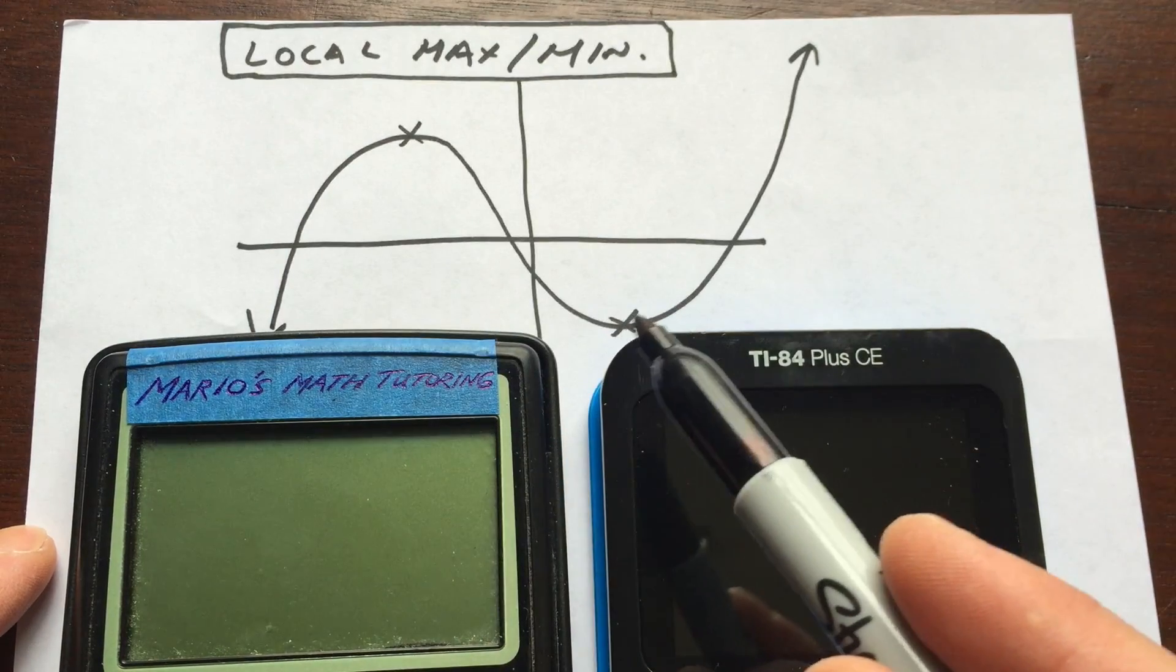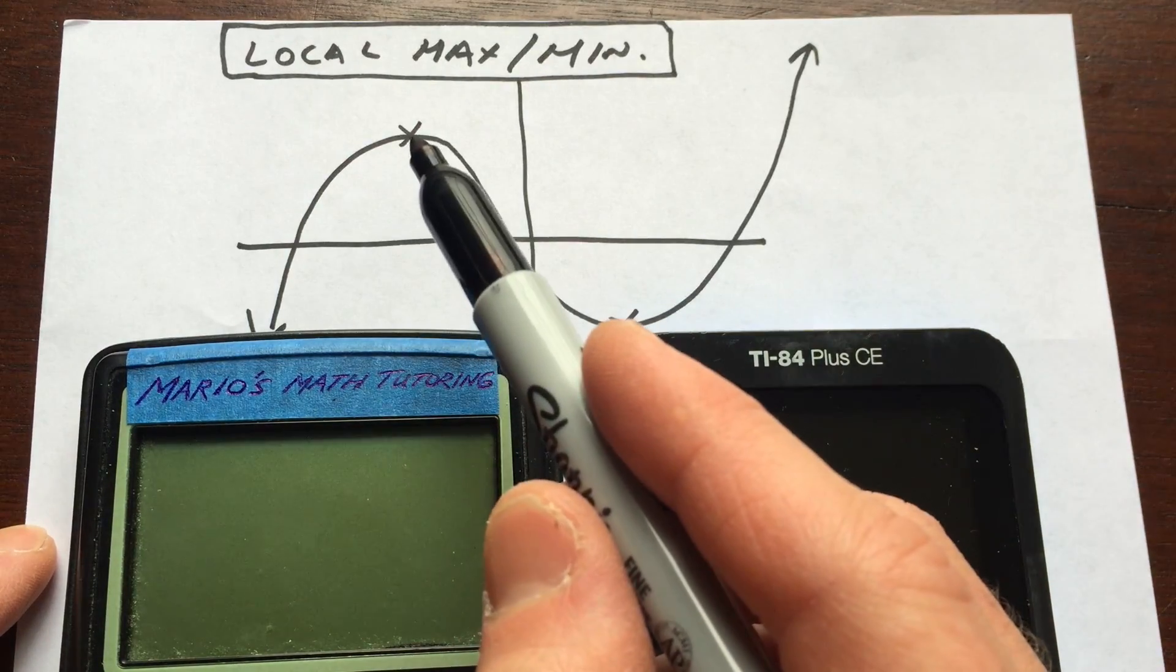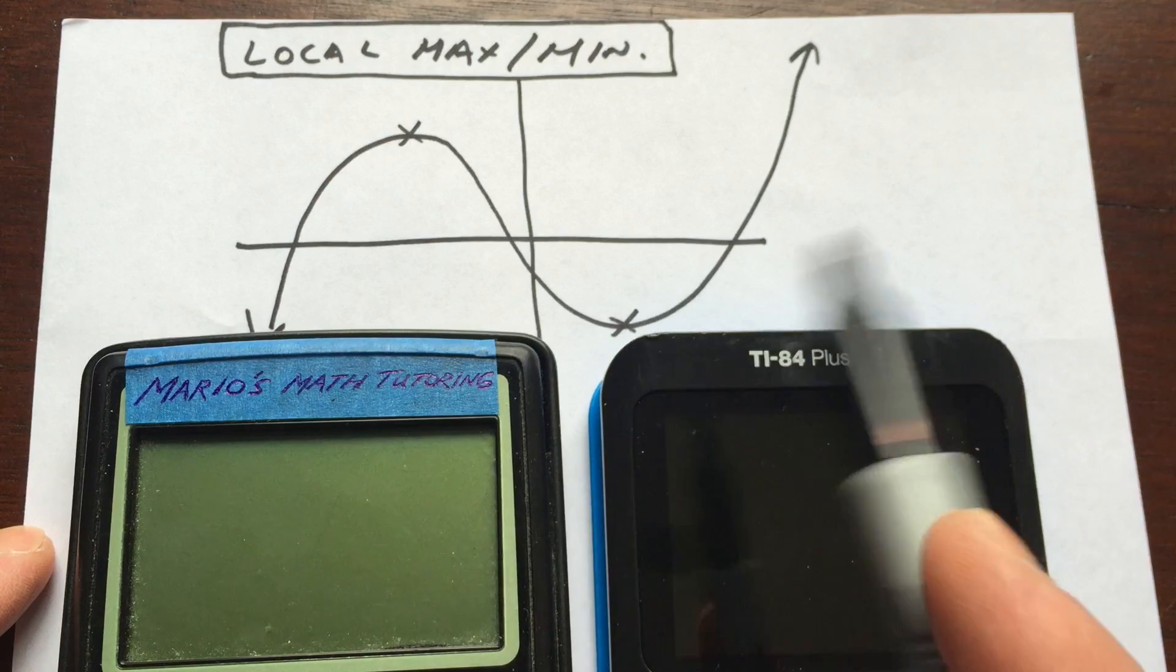Local high point or a local low point. And so we're going to find out the coordinates of those points using our graphing calculators.